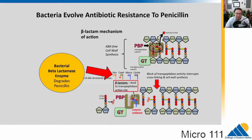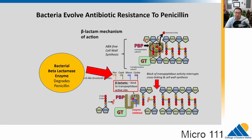Bacteria evolve resistance to antibiotics. The most basic way is they've evolved an enzyme called beta-lactamase. The 'ase' part means to chop or cut, so beta-lactamase is an enzyme that degrades beta-lactam antibiotics like penicillin. The bacteria produces this enzyme, which finds and degrades the penicillin, reopening the enzyme so it can build the cell wall properly. We found an antibiotic, bacteria evolved resistance to it, now we've got to find another — and bacteria will evolve to that too. It's an ongoing fight.